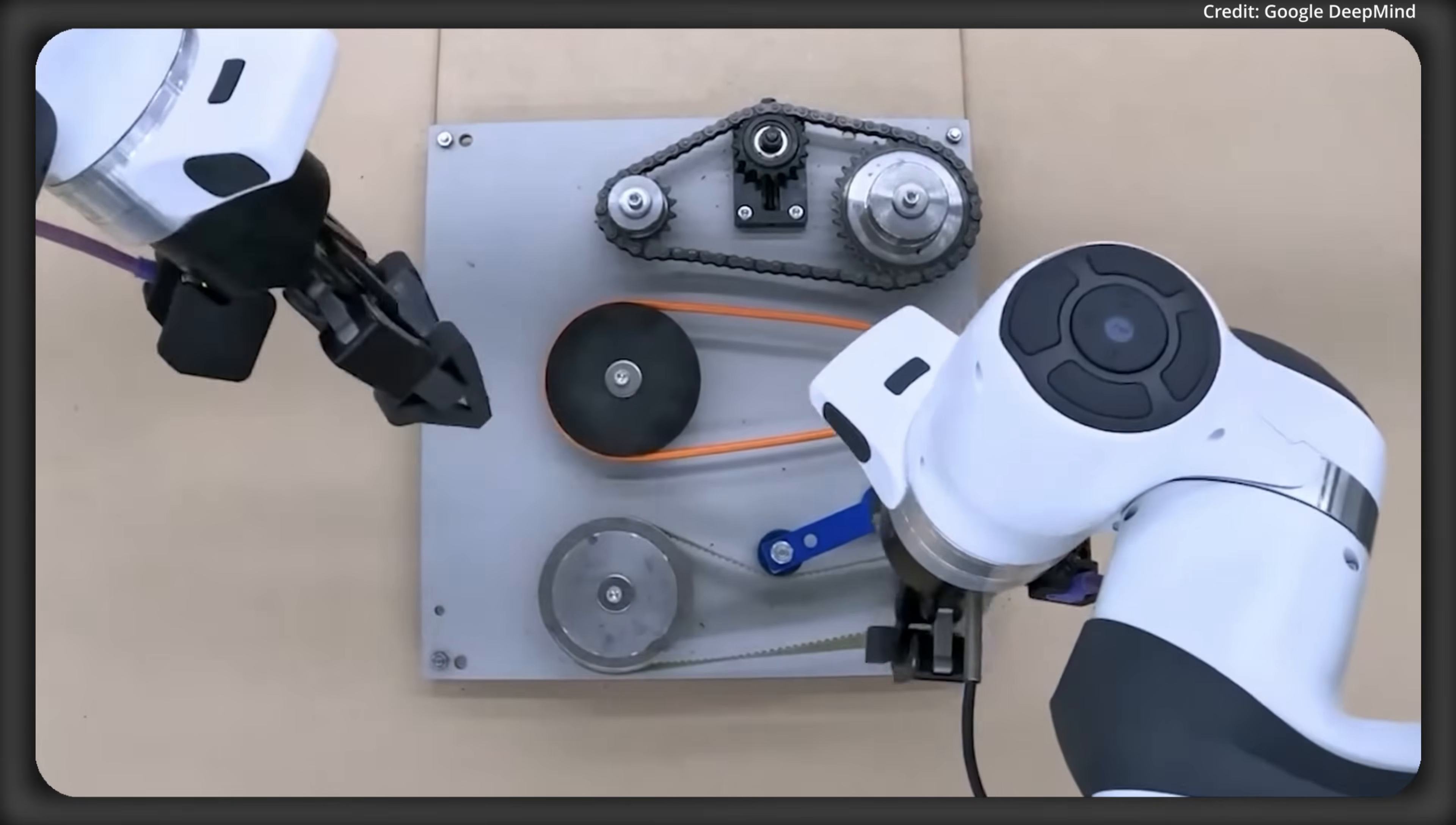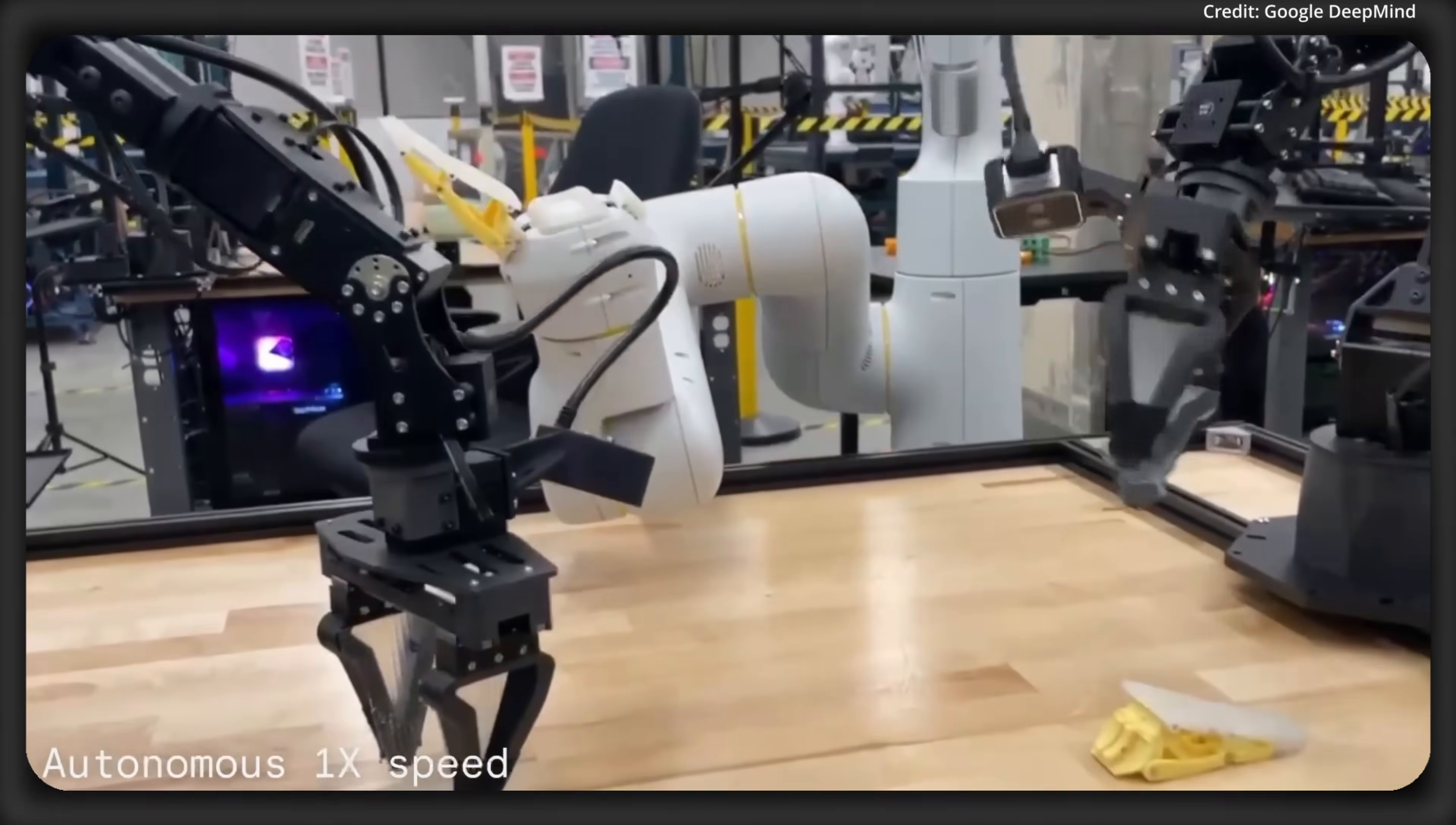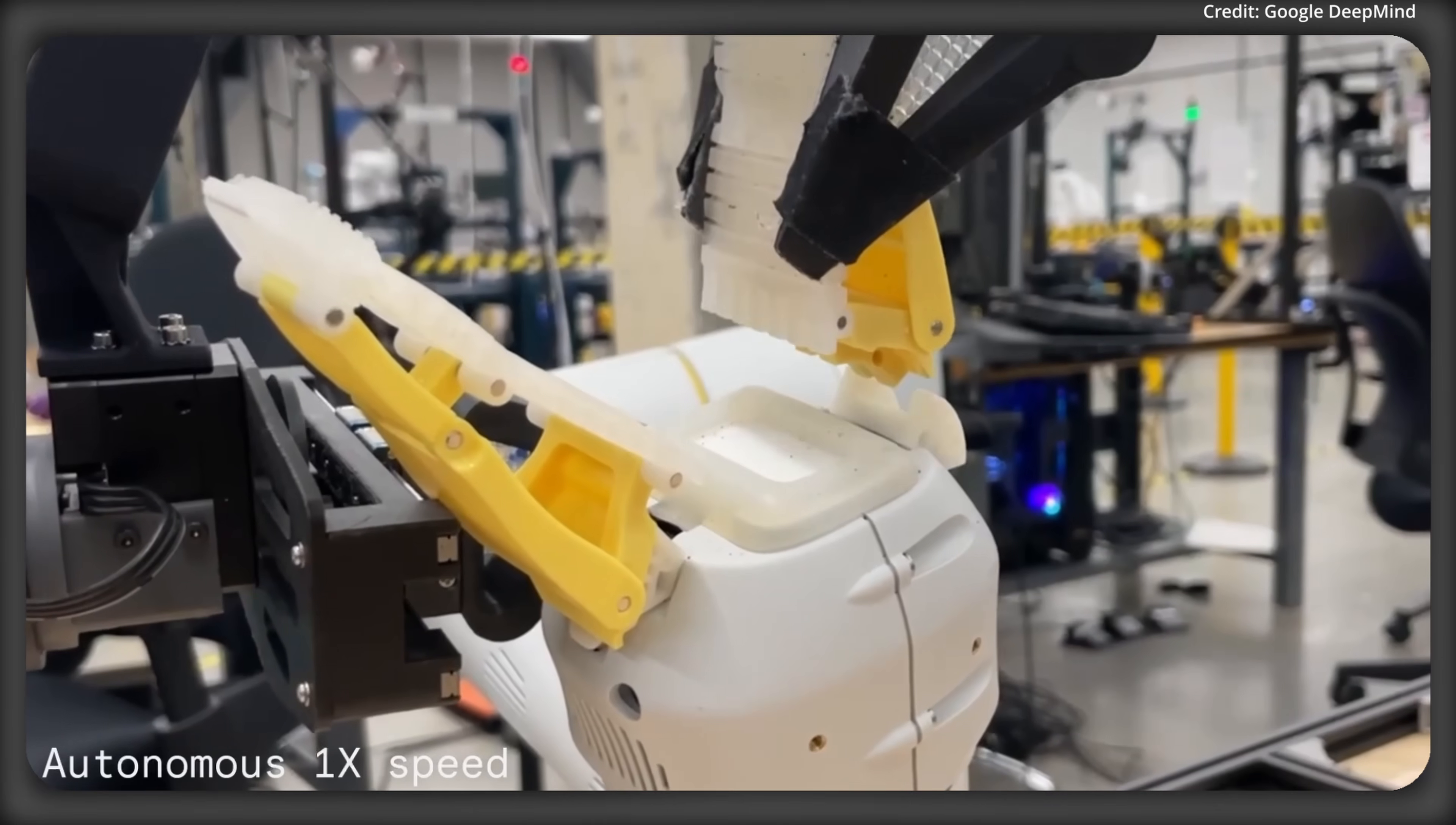And Gemini Robotics Enhanced Reasoning can even perform different steps to control robots right out of the box that haven't been programmed before, including for perception and state and 3D understanding or task planning and code generation. And it can even do end-to-end tasks. And as a result of this, Gemini Robotics Embodied Reasoning was able to achieve a 2 to 3x success rate compared to Gemini 2.0 by itself.